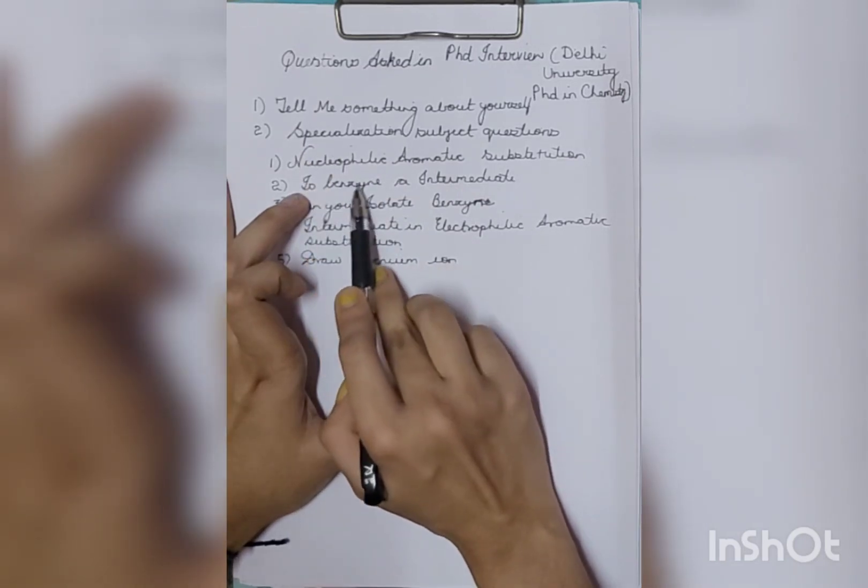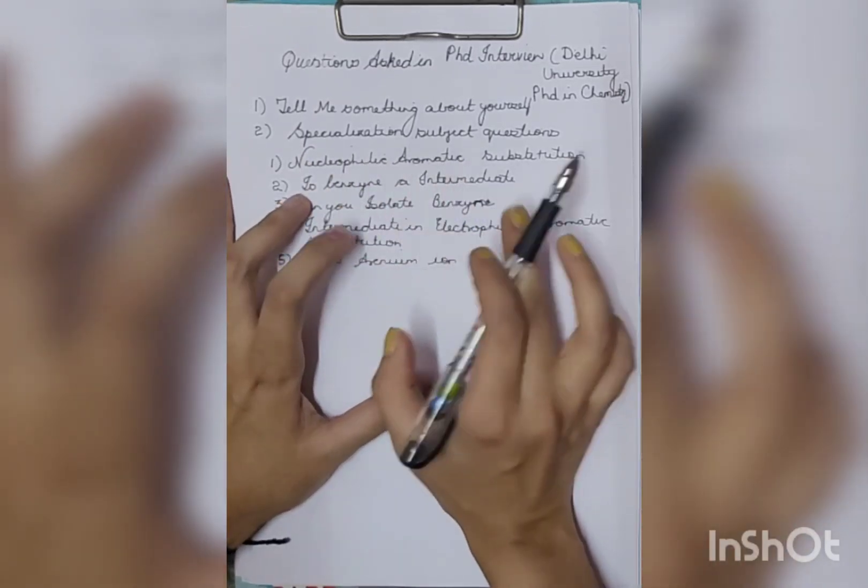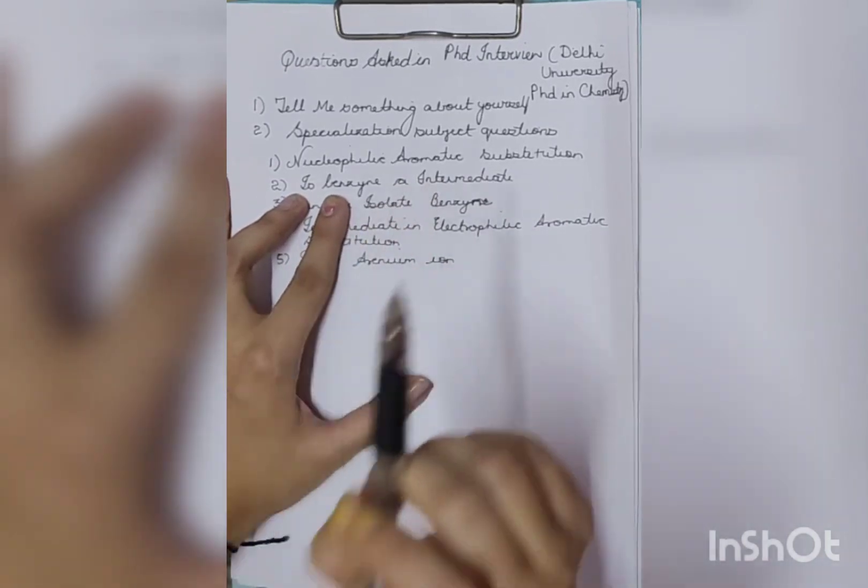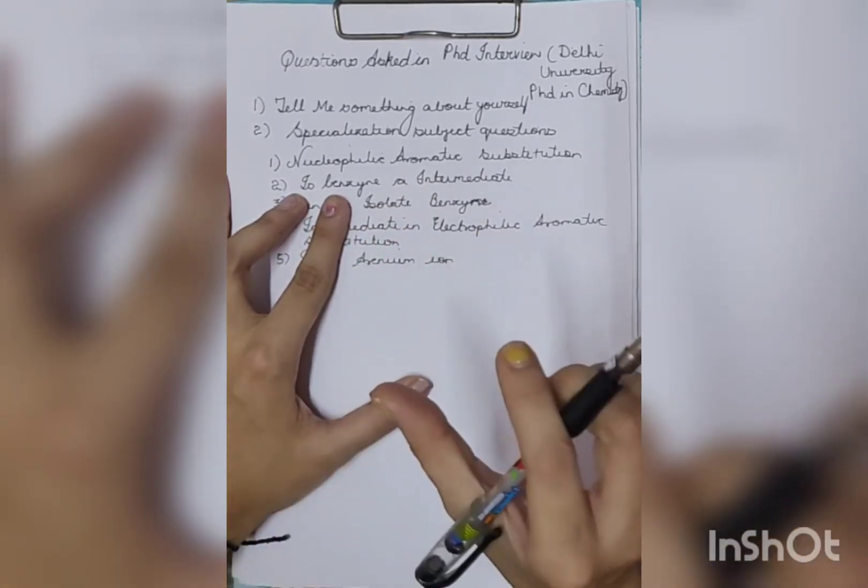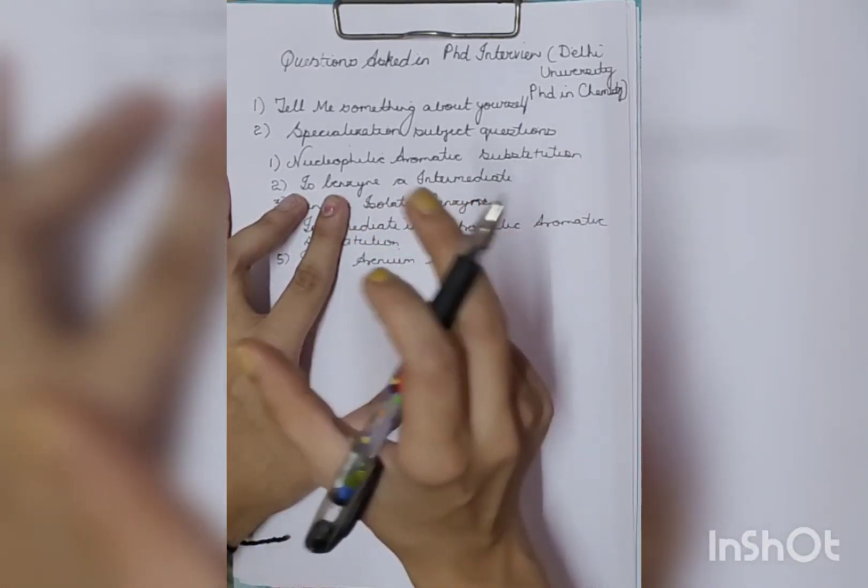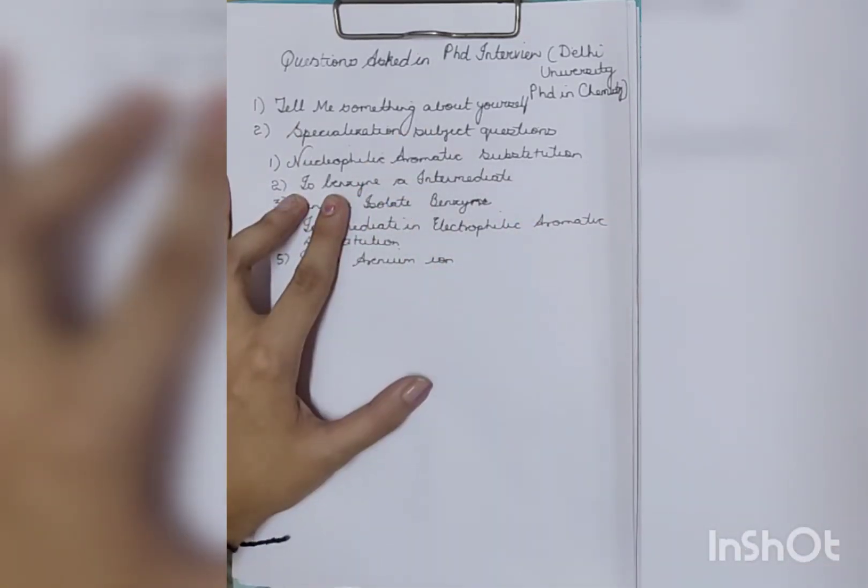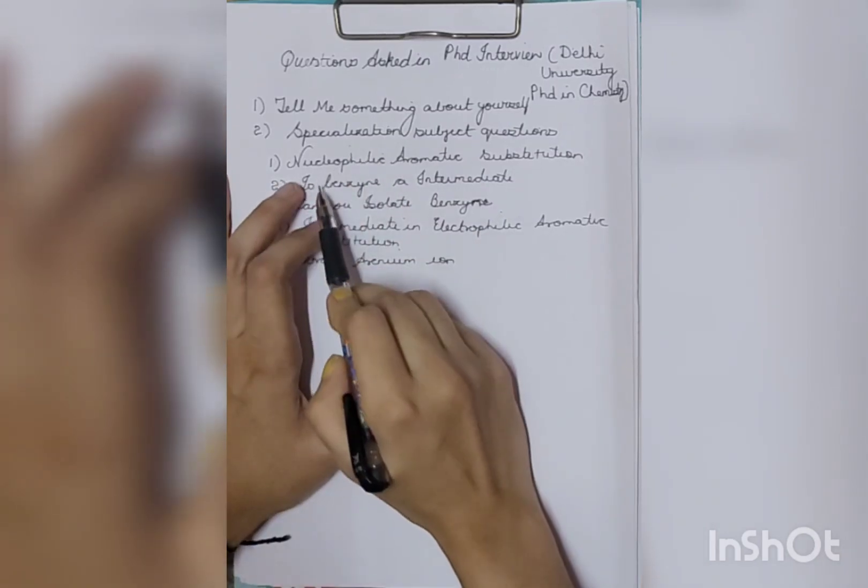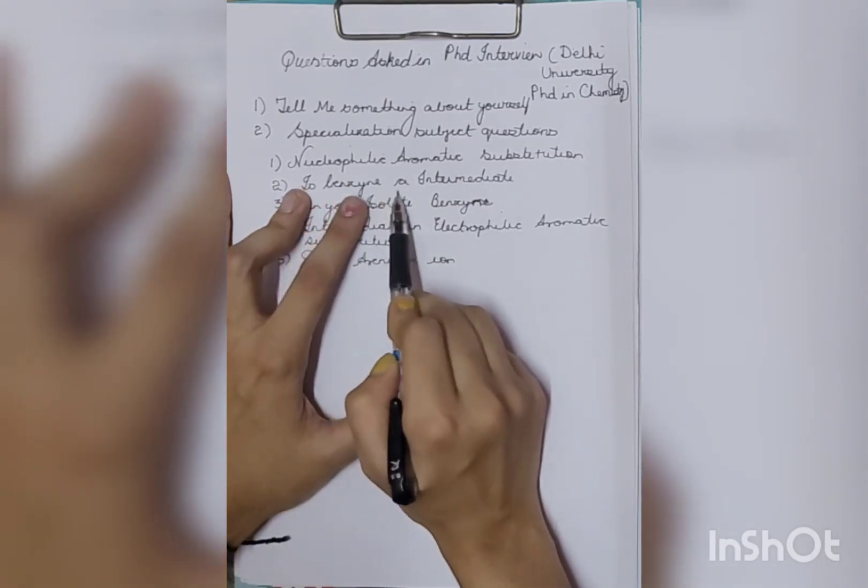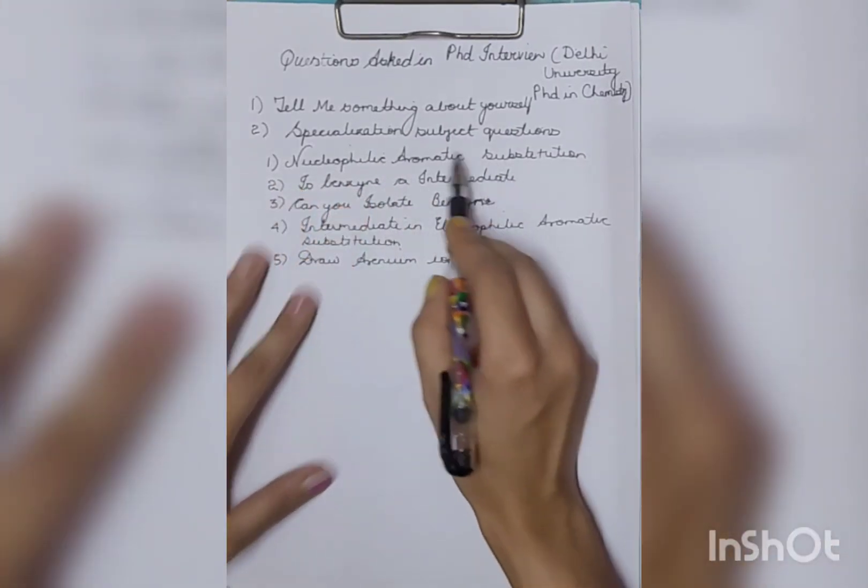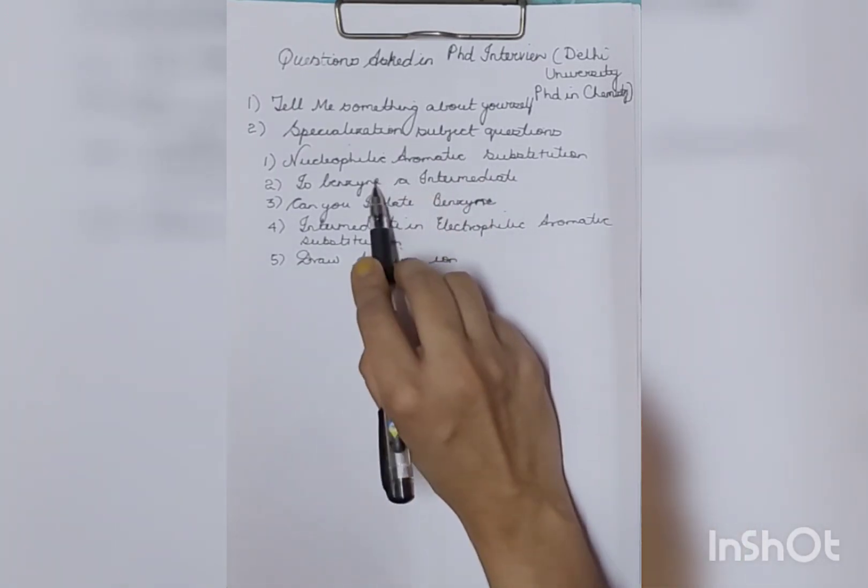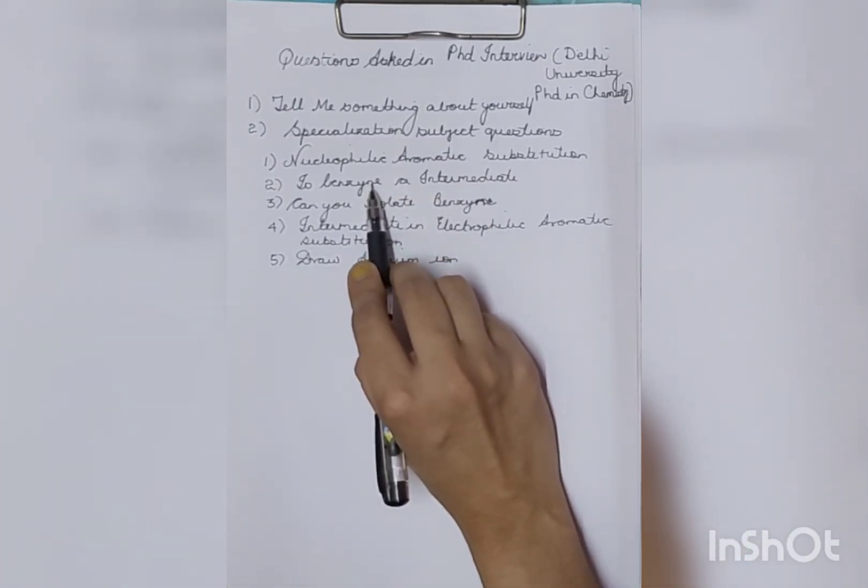Then from that, while giving explanation on this I went to benzyne - I named benzyne. So whatever you will name, now they will ask questions on that. So if you don't know anything, you just don't name the thing, otherwise what will happen is they will try to trap you in it and then you will get confused. They asked - is benzyne an intermediate?